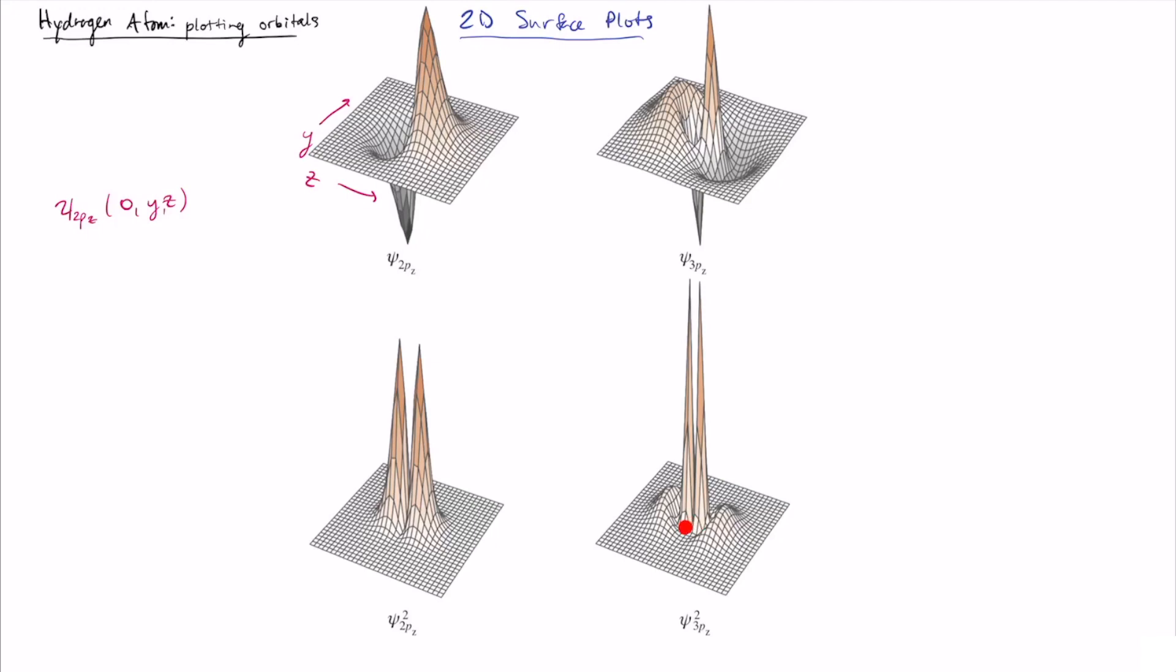So there's this node down at the center, and then there's another one at this shell edge. So you see that there's this sort of inner piece that has a large value. And then you have this outer lobe that extends further into space. Okay, so these are 2D surface plots.